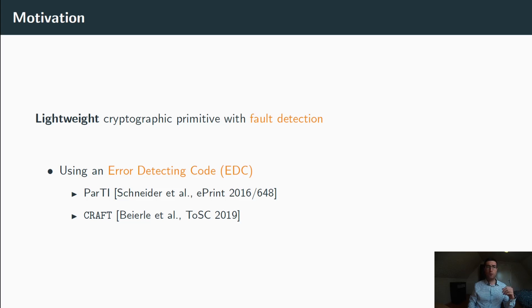More specifically, we wanted to do that using an error-detecting code. Using error-detecting code in cryptography is not a particularly new idea. In 2016, Schneider et al. proposed PARTY, which is a hardware countermeasure against side channel and fault attacks that combine a threshold implementation with some error-detecting code. Another example is that no later than last year, Bayerler et al. proposed CRAFT, which is a tweakable block cipher that can be adapted to different error-detecting codes.